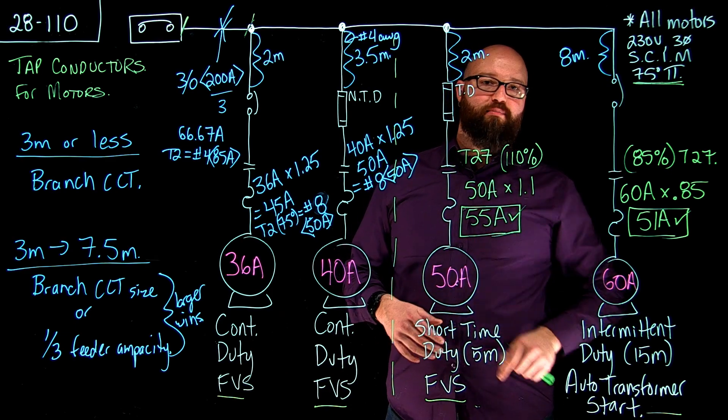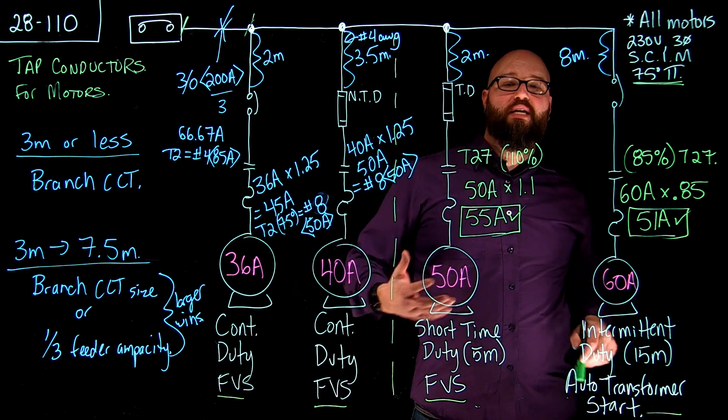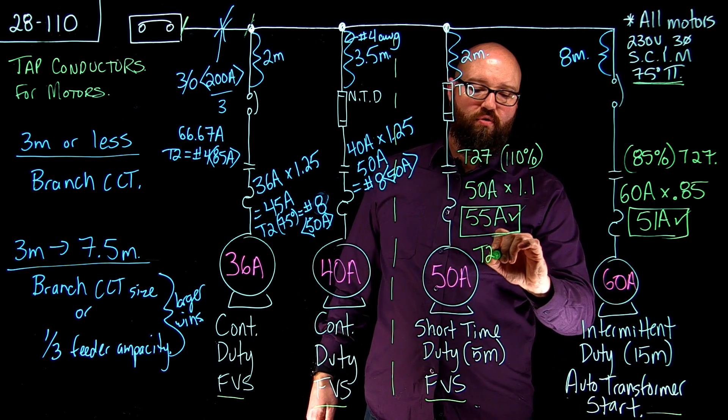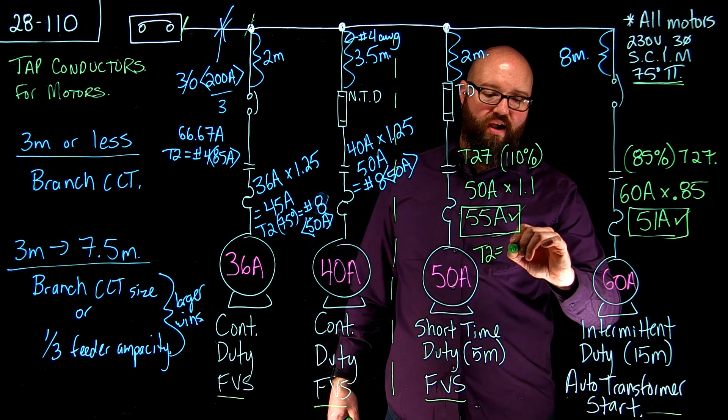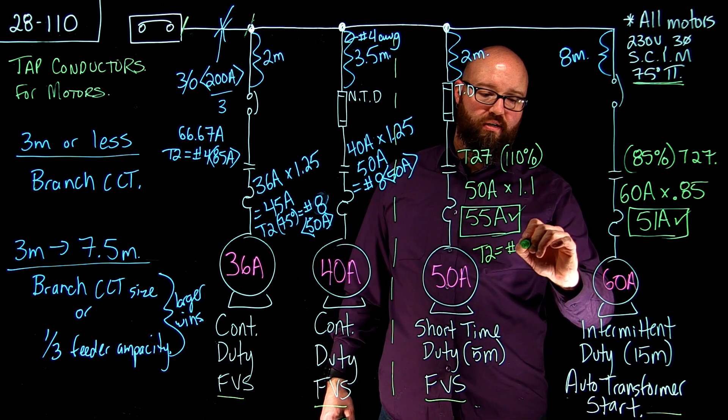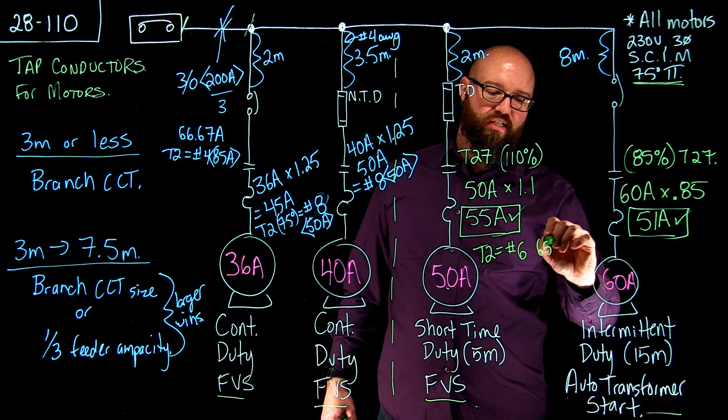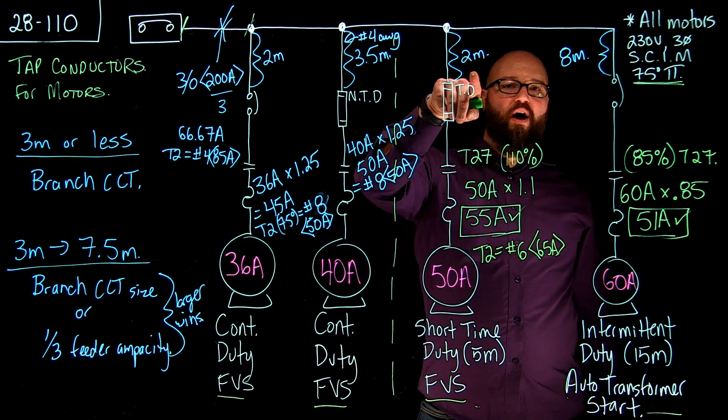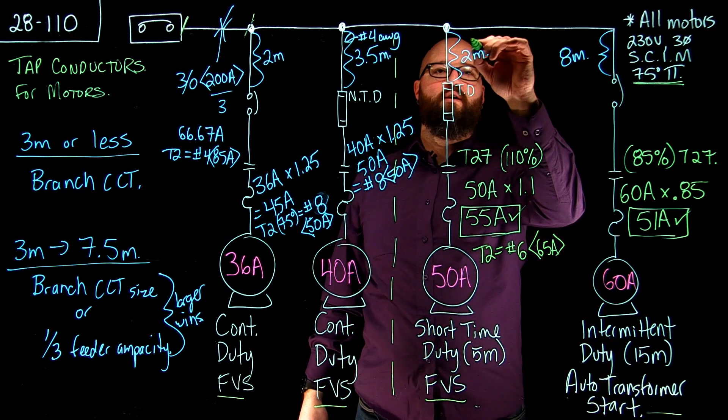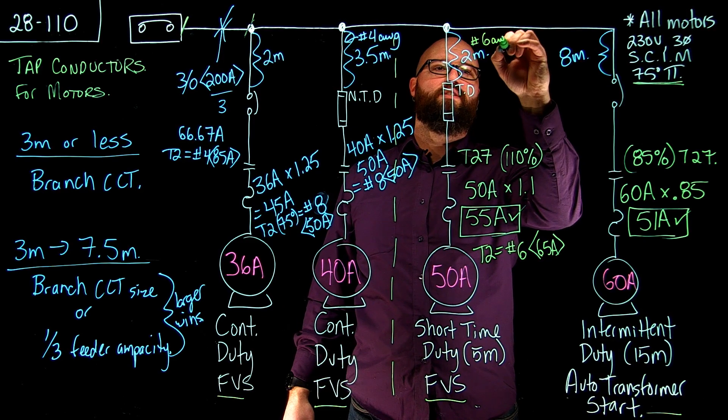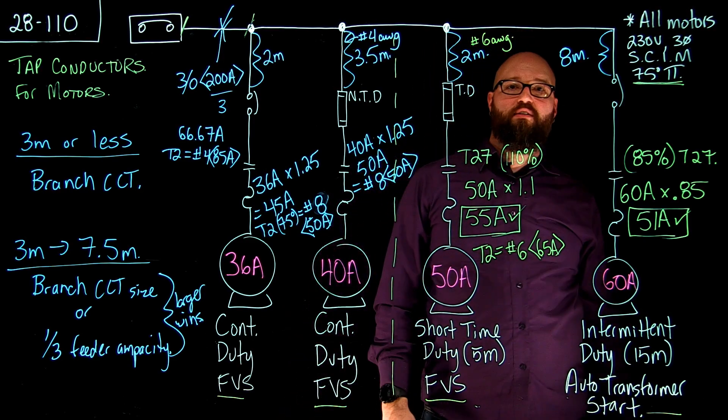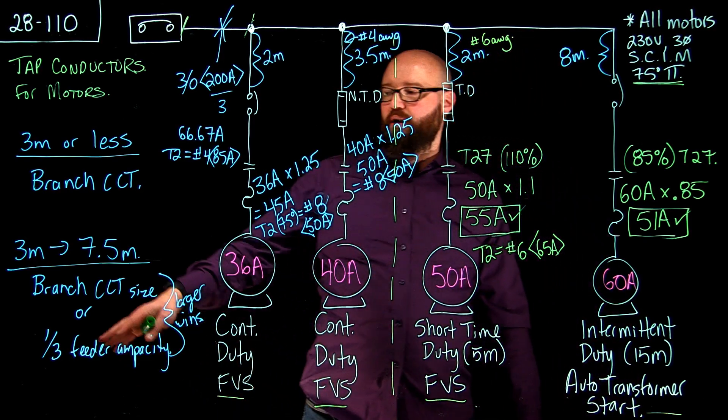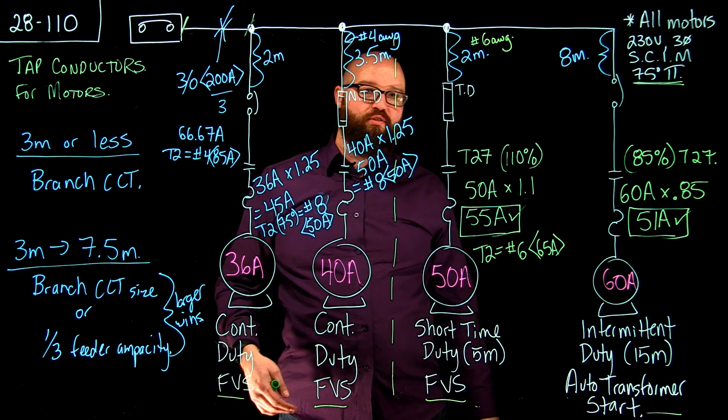Which gave us 55 amps. Now 55 amps I can take that now to table 2 and I can select from there I can go with a number 6 which is good for 65 amps. And again we're under 3 meters so here a number 6 will suffice as a tap conductor. Again I'm not comparing it because we're 3 meters or less.